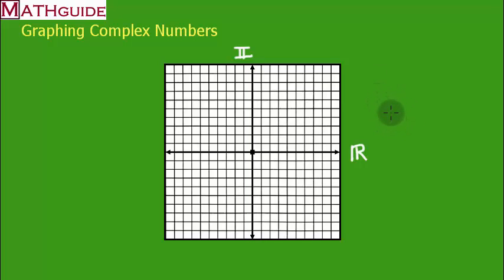And it's important for us to graph using this new set of horizontal and vertical axes because when we take a look at what complex numbers look like, we always write them in the form A plus BI. The A is always our real part and the BI part is our imaginary part.